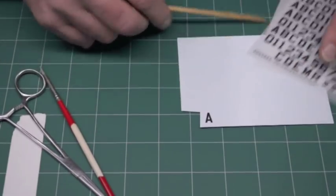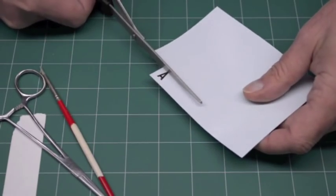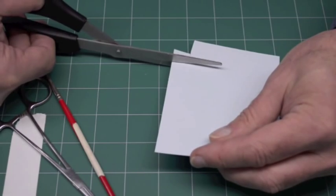Lift the carrier film, take a pair of scissors, trim it off.